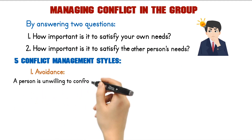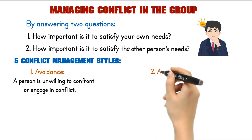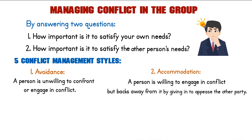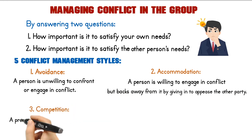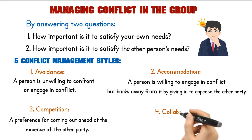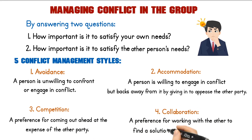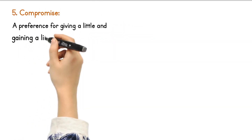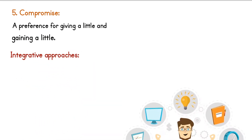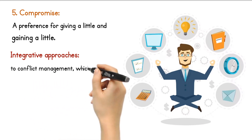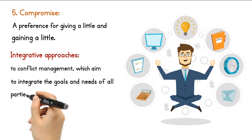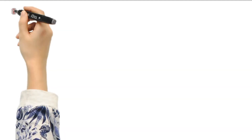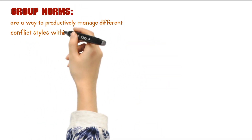Avoidance is when a person is unwilling to confront or engage in conflict. Accommodation is when a person is willing to engage in conflict but backs away from it by giving in to appease the other party. Competition shows a preference for coming out ahead at the expense of the other party. Collaboration shows a preference for working with the other to find a solution that pleases both parties. Compromise shows a preference for giving a little and gaining a little. Integrative approaches, which aim to integrate the goals and needs of all parties involved, tend to lead to better decisions and outcomes than competitive or distributive approaches. Group norms are a way to productively manage the different conflict styles within your group.